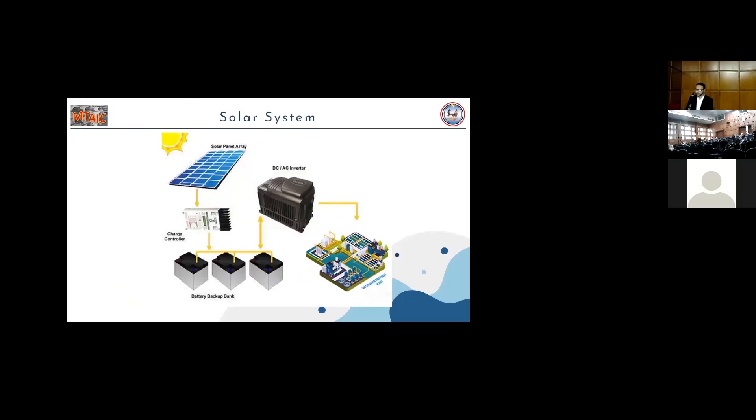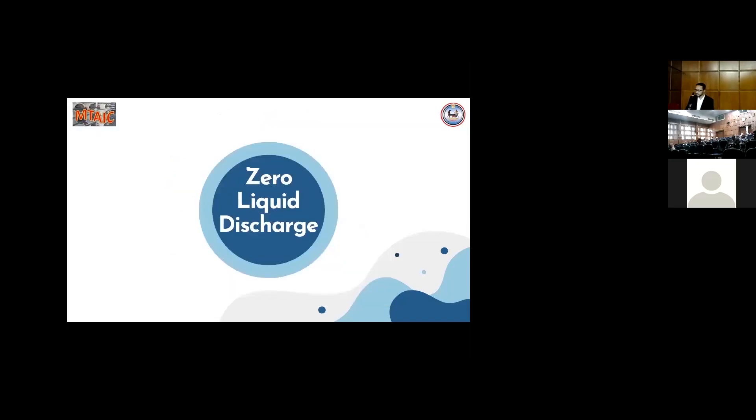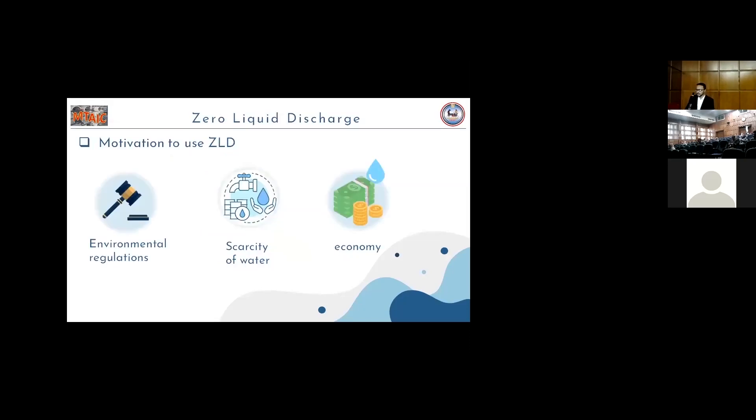The solar system off-grid system includes solar panels that convert sunlight to electricity, and charge controller that regulates charge to batteries. The inverter converts the DC current to AC. And the zero liquid discharge is an advanced water process that is used for the environmental regulations, scarcity of water, and to increase the water recovery.